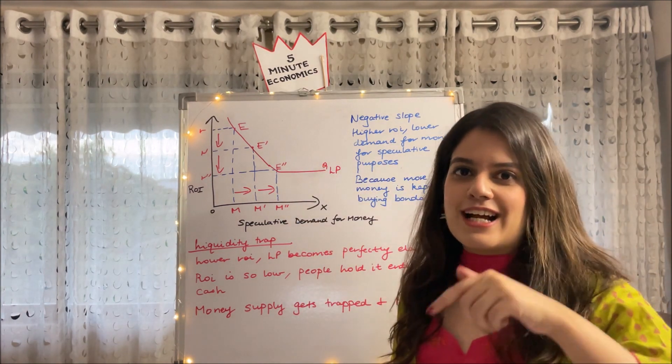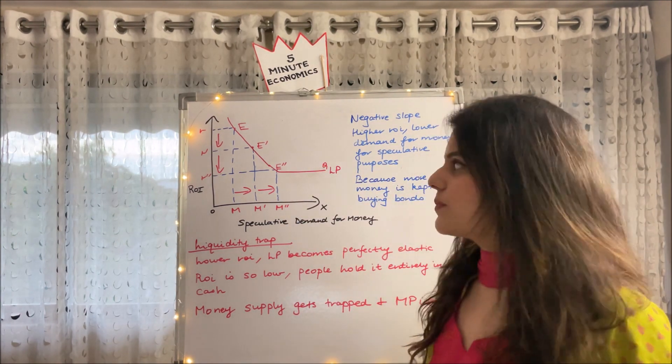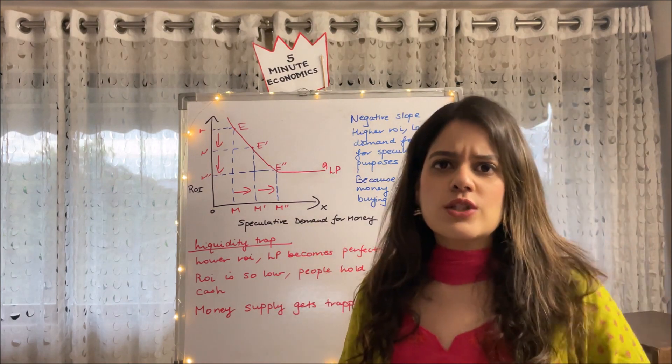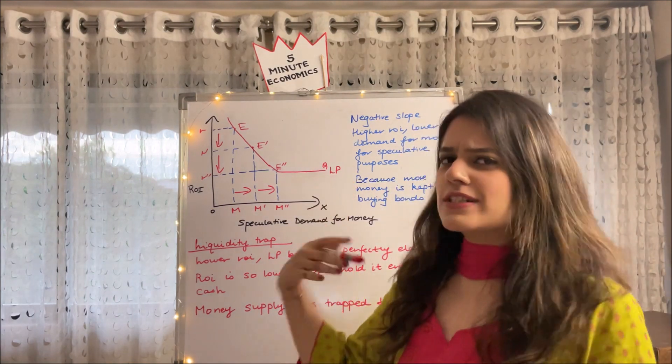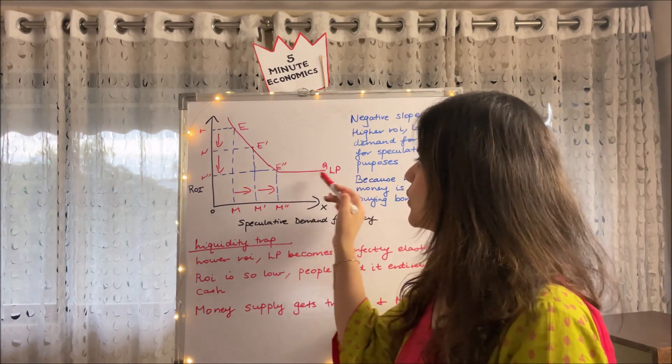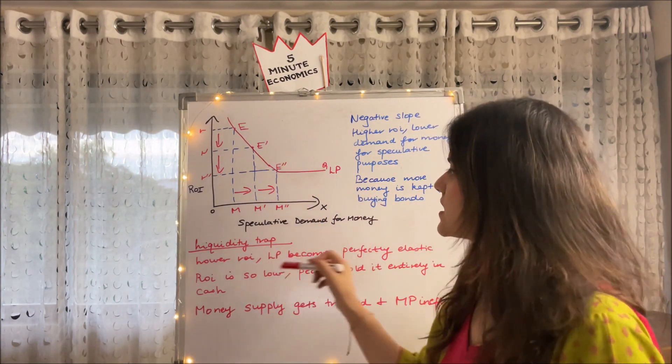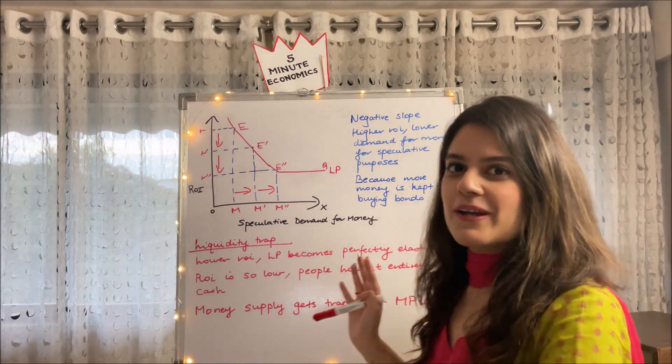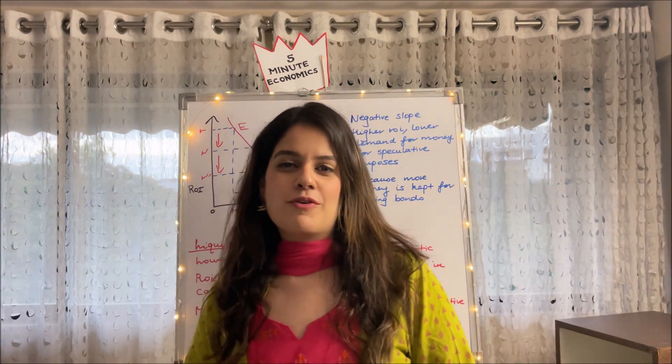The monetary policy is pretty much ineffective at this particular point. I have made a video on monetary policy, I'll attach its link in the comment section below where I have linked the monetary policy to the liquidity trap. At this point fiscal policy steps in. This is the point of liquidity trap. So this is the diagram and this is all about the speculative motive for demand for money.